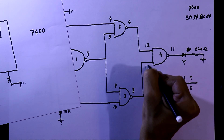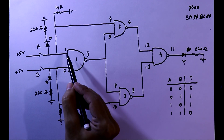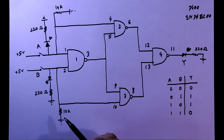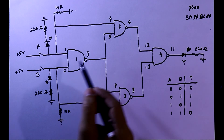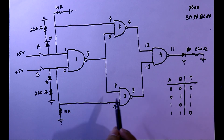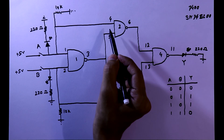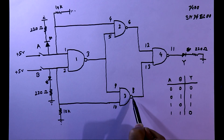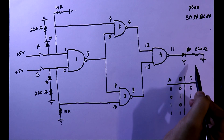The connections: inputs have pull-down resistors. Pin 1 connects to pin 4, pin 2 connects to pin 10. Output pin 3 connects to pins 5 and 9. Pin 6 connects to pin 12, and pin 8 connects to pin 13. The XOR output comes from pin 11, connected to the output LED.